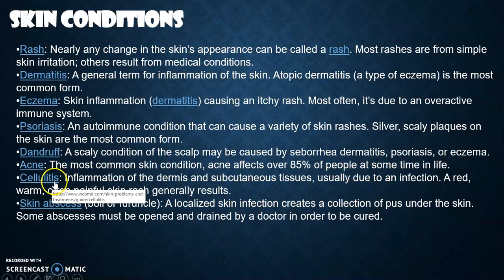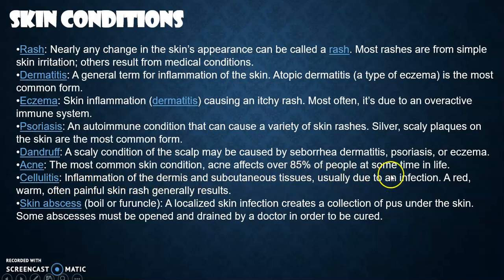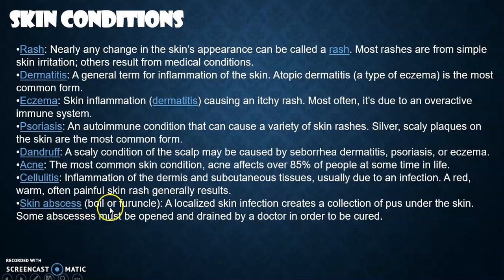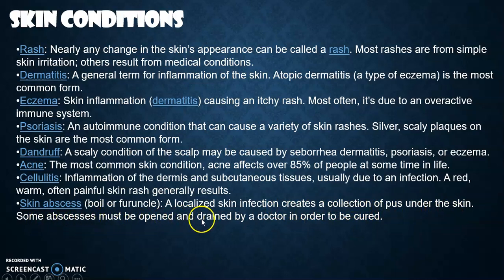Cellulitis is inflammation of the dermis and subcutaneous tissues, usually due to an infection. A red, warm, often painful skin rash generally results. Skin abscess, also called a boil or furuncle, is a localized skin infection that creates a collection of pus under the skin. Some abscesses must be opened and drained by a doctor in order to be cured.